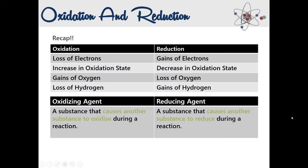Let's do a recap on today's lesson. Reduction is the process of gaining electrons; oxidation is the process of losing electrons. Reduction occurs when the oxidation number of a reactant decreases; oxidation occurs when the oxidation number of a reactant increases. Oxidation is the process of gaining oxygen; reduction is the process of losing oxygen. Oxidation is the process of losing hydrogen; reduction is the process of gaining hydrogen. An oxidizing agent causes another substance to oxidize; a reducing agent causes another substance to reduce.